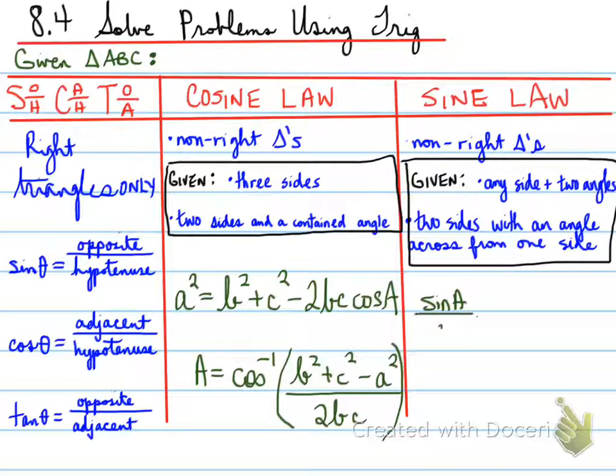And here's the sine law. Sine A over A, cosine B over B, equals sine C over C. All right. Now, let's look at examples where we have to decide what we're going to use to solve the problems.